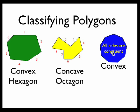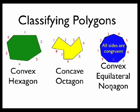It does tell us that all sides are congruent, so this would be equilateral only. And there are a total of nine sides, so this would be a convex equilateral nonagon.